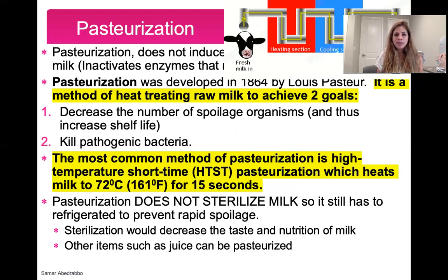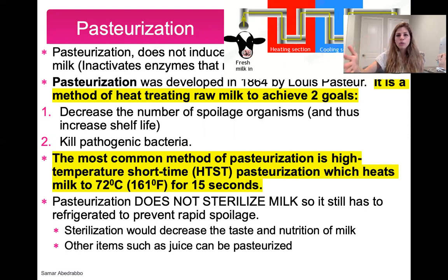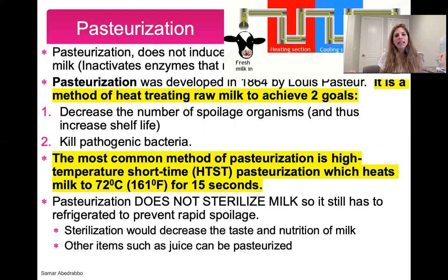I want everyone to do an experiment: next time you go to the supermarket, look at pasteurized milk and ultra-pasteurized milk and compare the expiration dates. You'll notice that ultra-pasteurized milk has an expiration date about two months out, because it's been very highly pasteurized — so many spoilage organisms as well as pathogenic bacteria have been removed that the milk lasts a really long time. Versus raw milk, which has a very small shelf life with a very quick expiration.